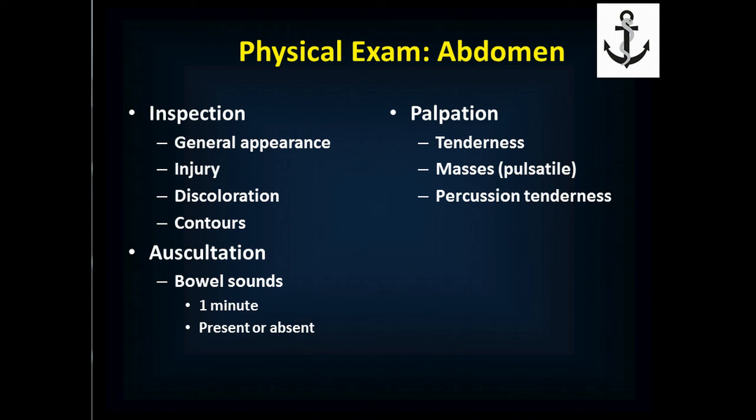We palpate for tenderness — does it hurt where I push? We're also palpating for masses, and we need to describe them as either pulsatile or not. A pulsatile mass in the midline of the abdomen is very concerning for an abdominal aortic aneurysm, where the aorta balloons out. If it's pulsatile, tender, and the patient has significant abdominal pain — particularly going to the back or down into the femoral creases where the legs join the body — they probably have a rupturing AAA and need surgery immediately.